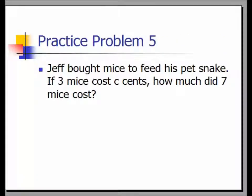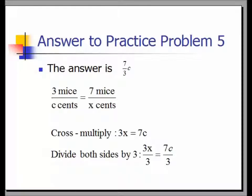Practice problem five: Jeff bought mice to feed his pet snake. If 3 mice cost C cents, how much did 7 mice cost? This is the type of problem where you really need a proportion and can't do it in your head. The answer is 7/3 C. Set up a proportion: 3 mice over C cents equals 7 mice over x cents. Cross multiply to get 3x equals 7C. Dividing both sides by 3 gives x equals 7C over 3.